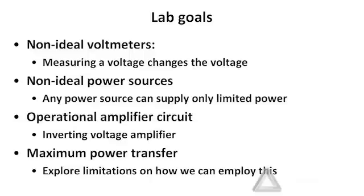For the non-ideal voltmeters part, we'll see that measuring a voltage changes the voltage being measured. Hopefully, the change to the voltage we're measuring is negligible, but we'll look at a condition where that change is not negligible. Likewise, for non-ideal power sources, we've said in lecture that a power source can supply only limited power. We will also wire up a circuit which attempts to pull more power from the power source than it is actually capable of delivering, and we'll look at the side effects of that.